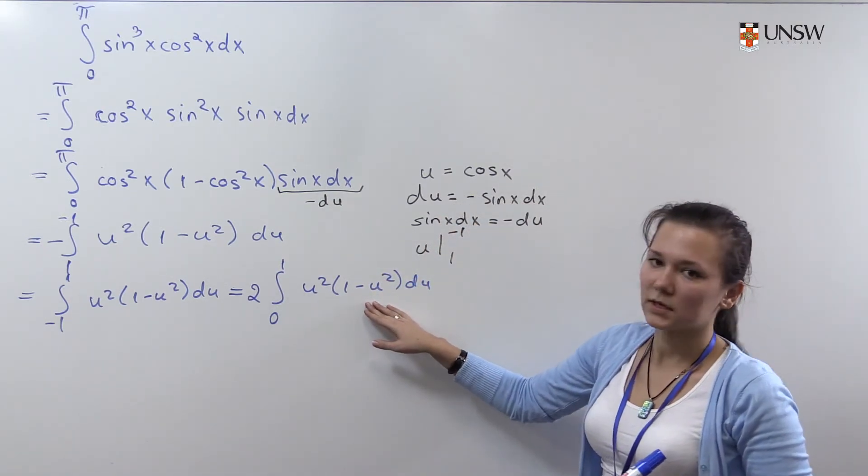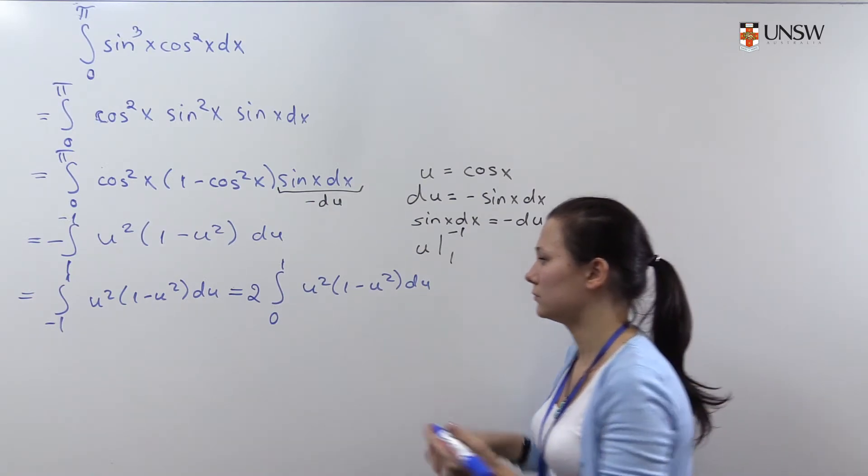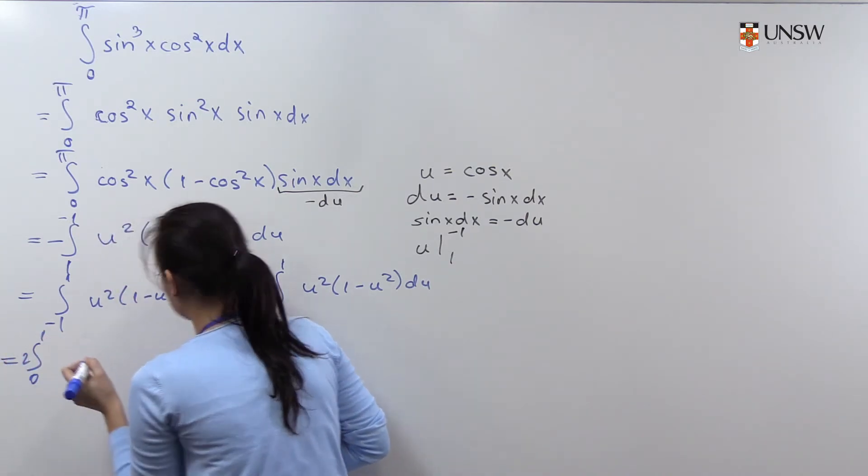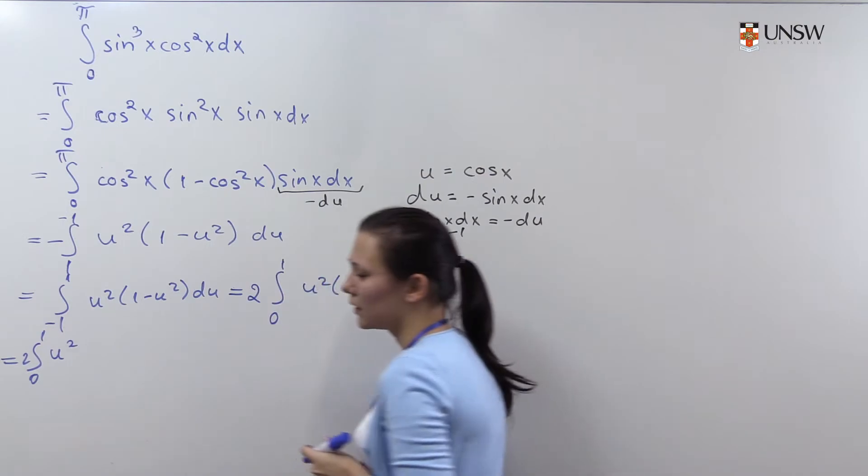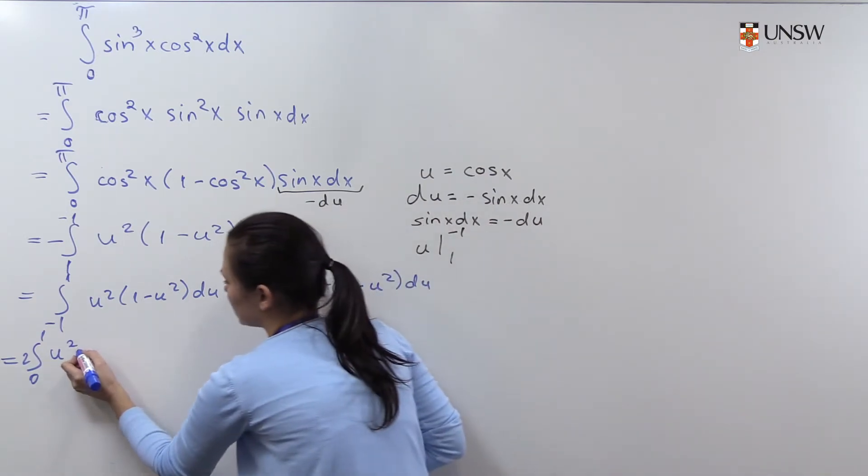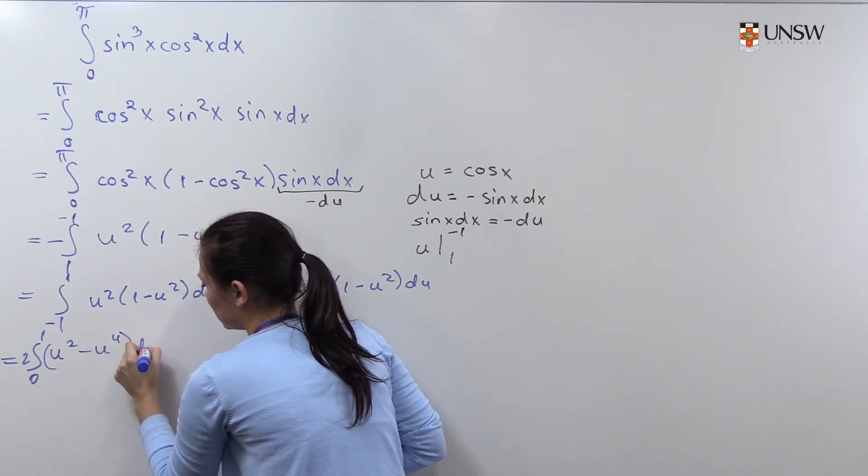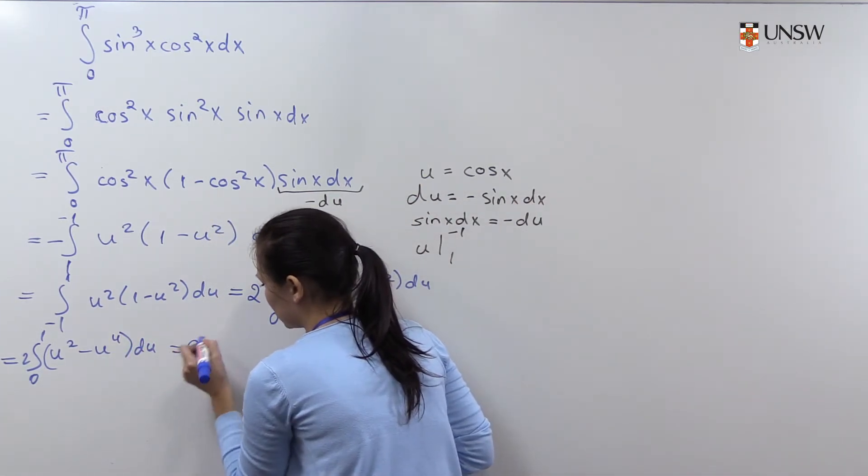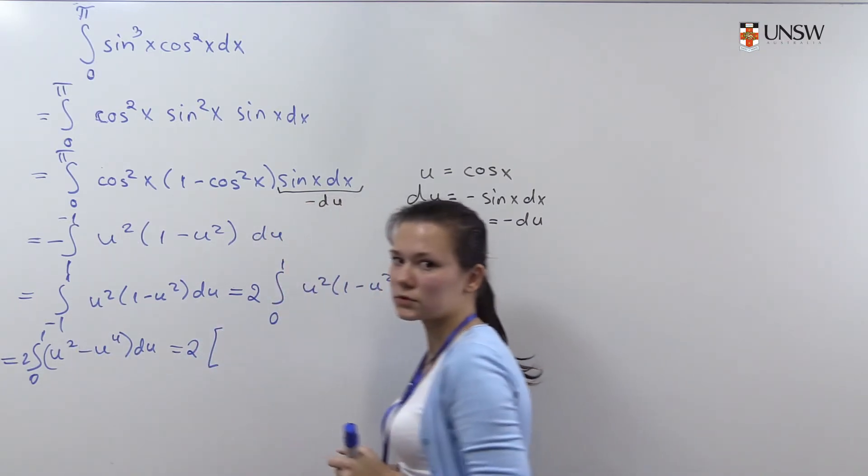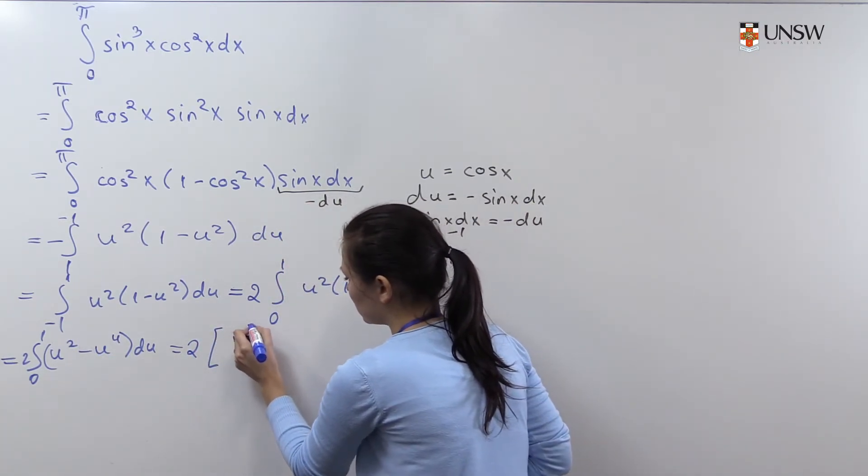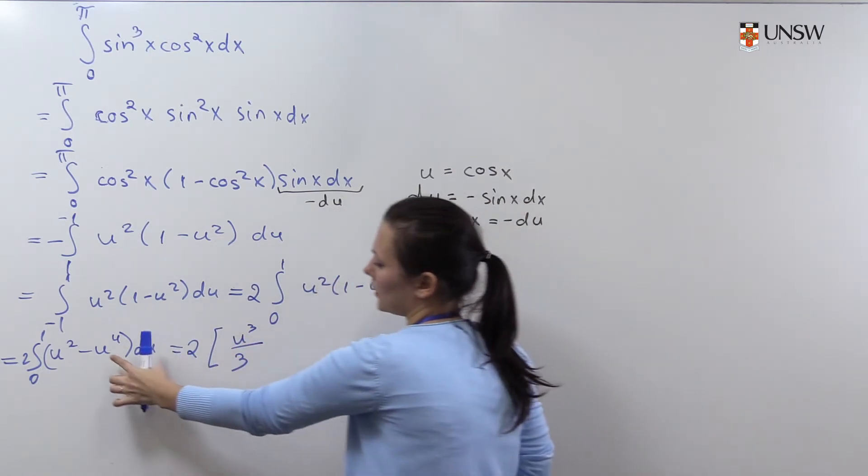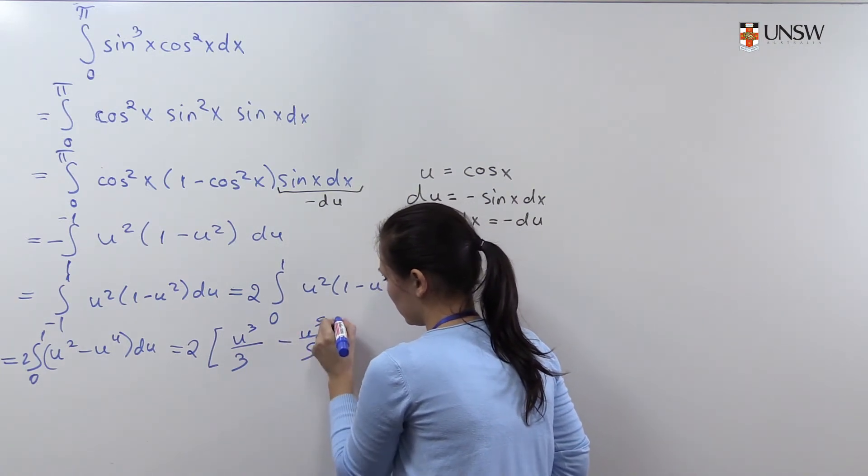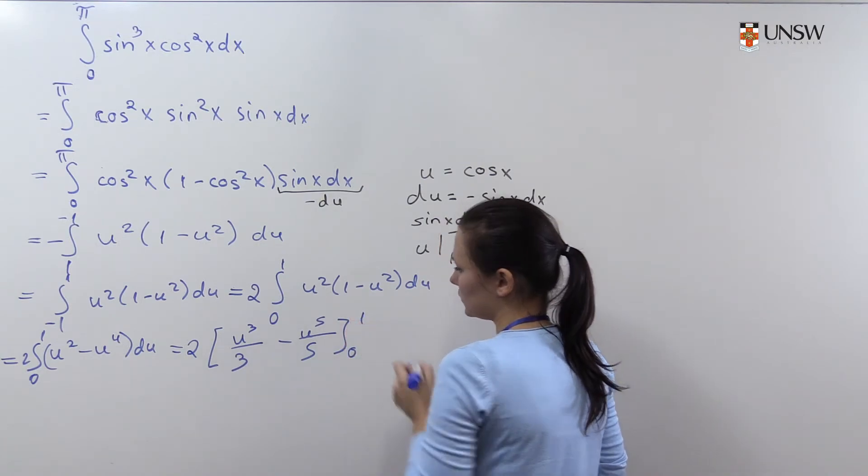The function inside of the integral is just a simple polynomial, and therefore we can easily evaluate this integral. Firstly we will write this as u squared minus u to the power 4 du. For this integral it will be 2 times: antiderivative of u squared is u cubed over 3, and antiderivative of u to the power 4 is u to the 5 over 5, evaluated from 0 to 1.